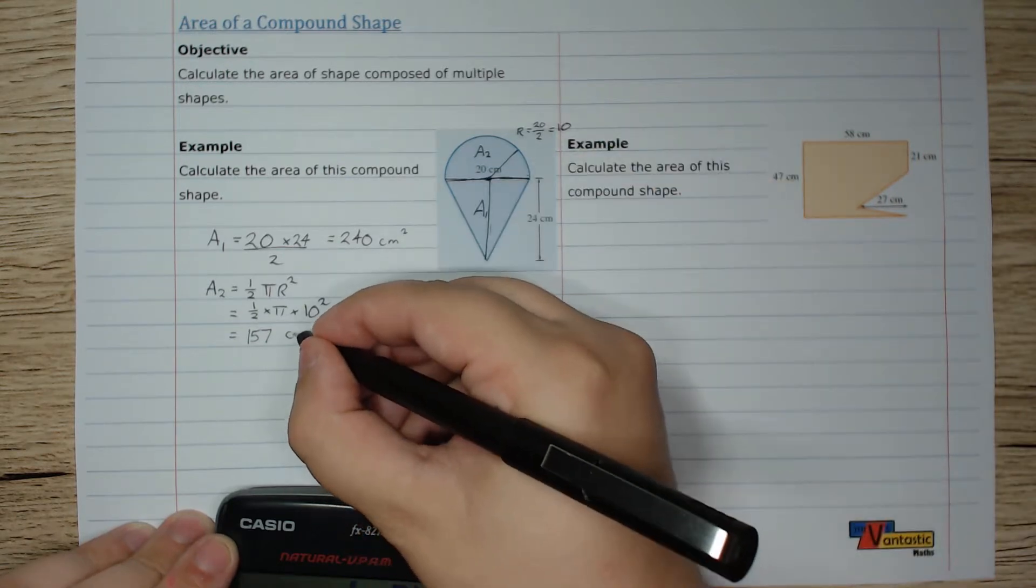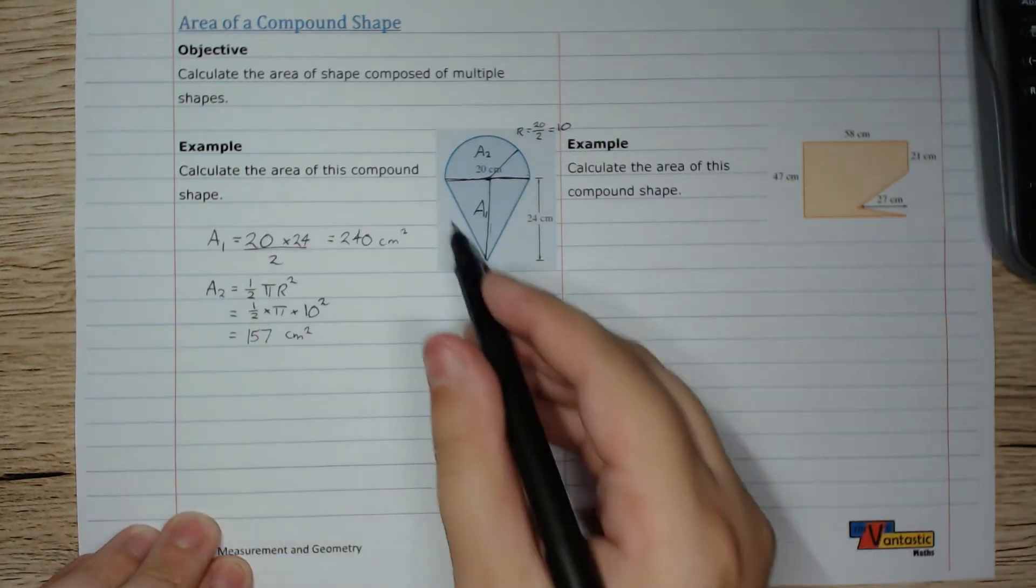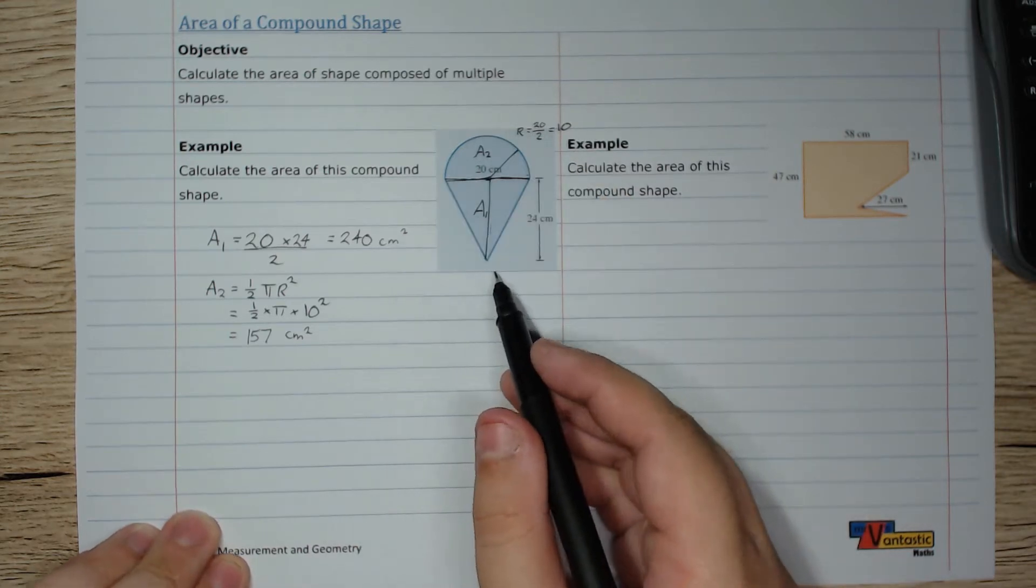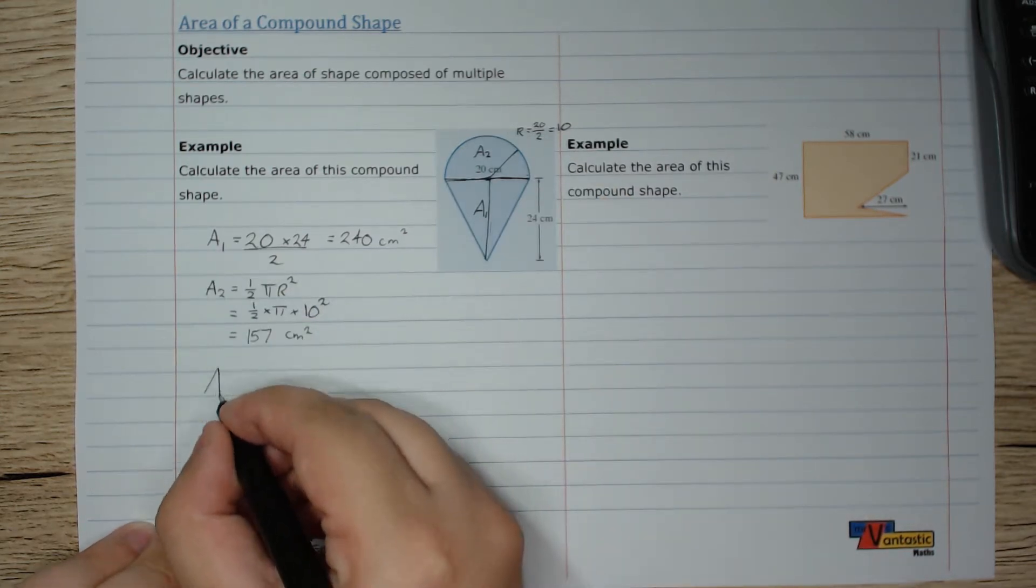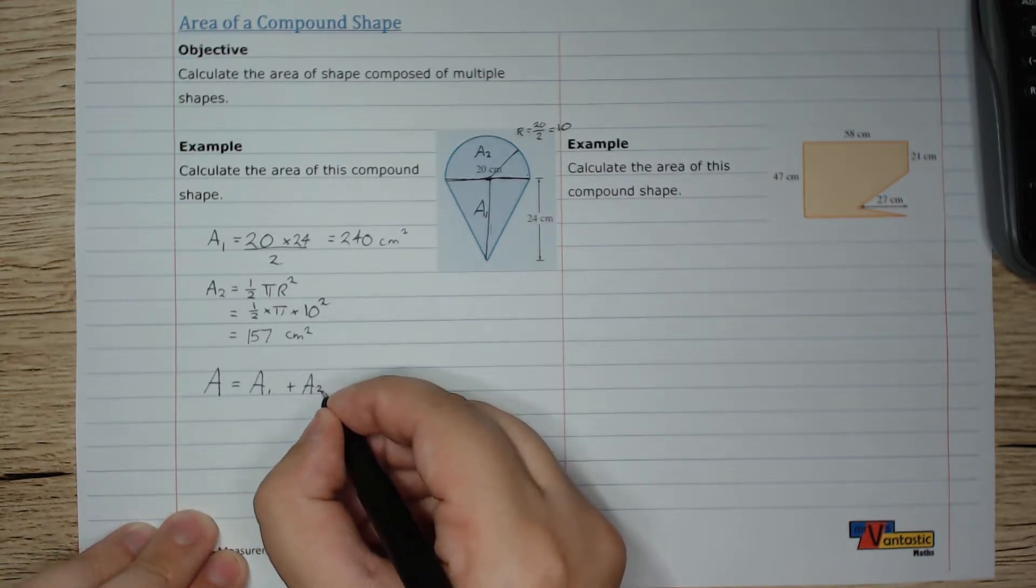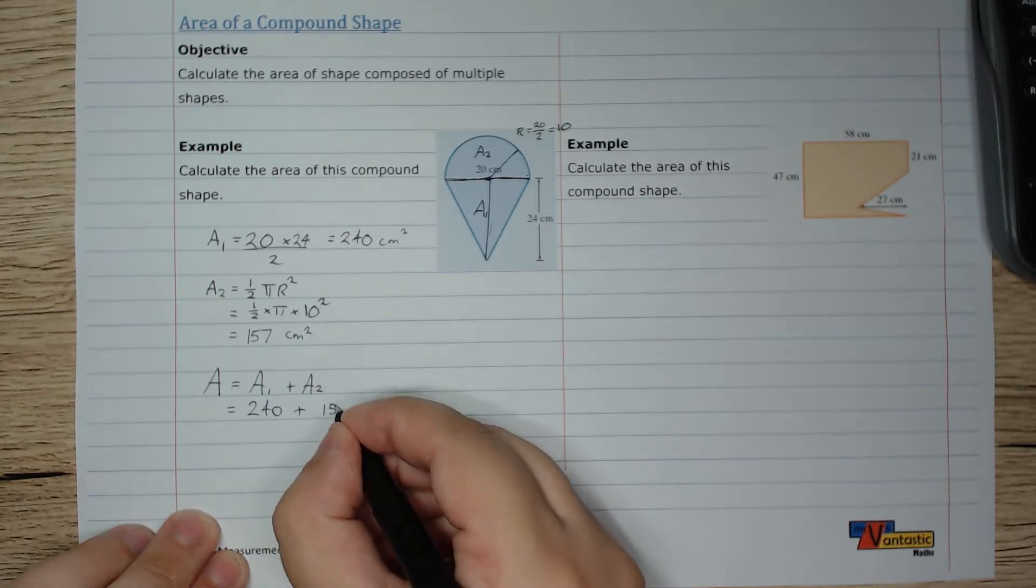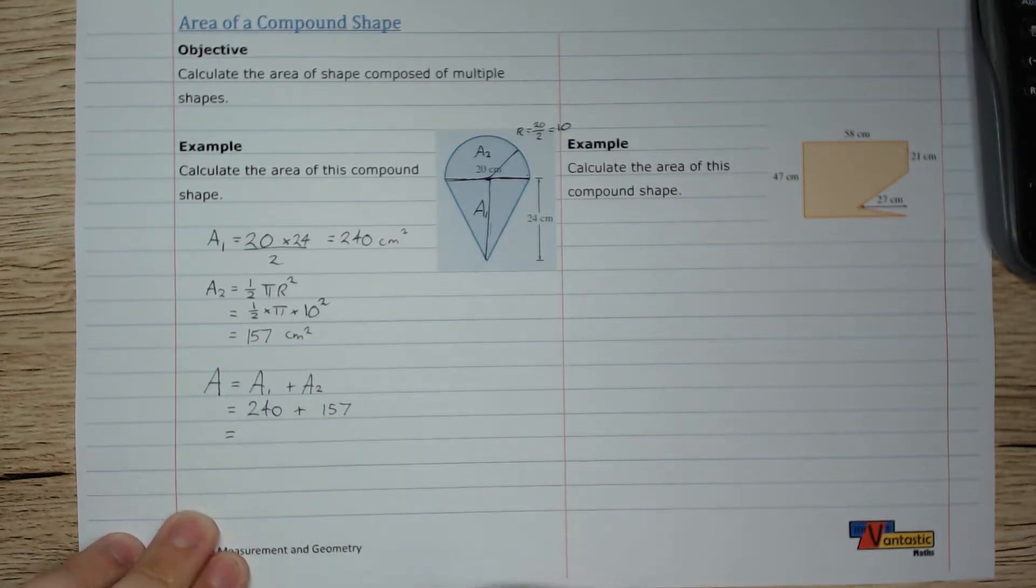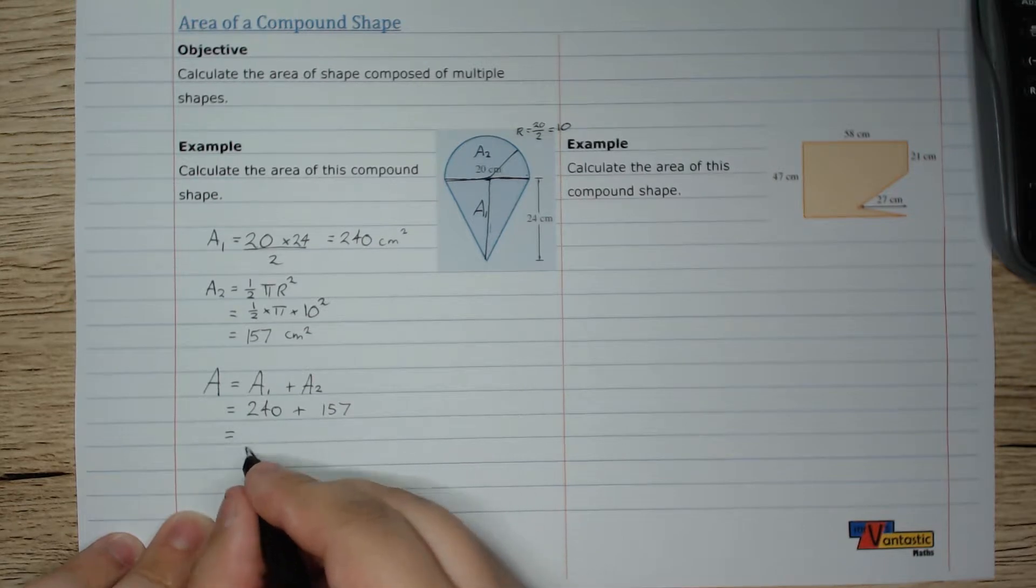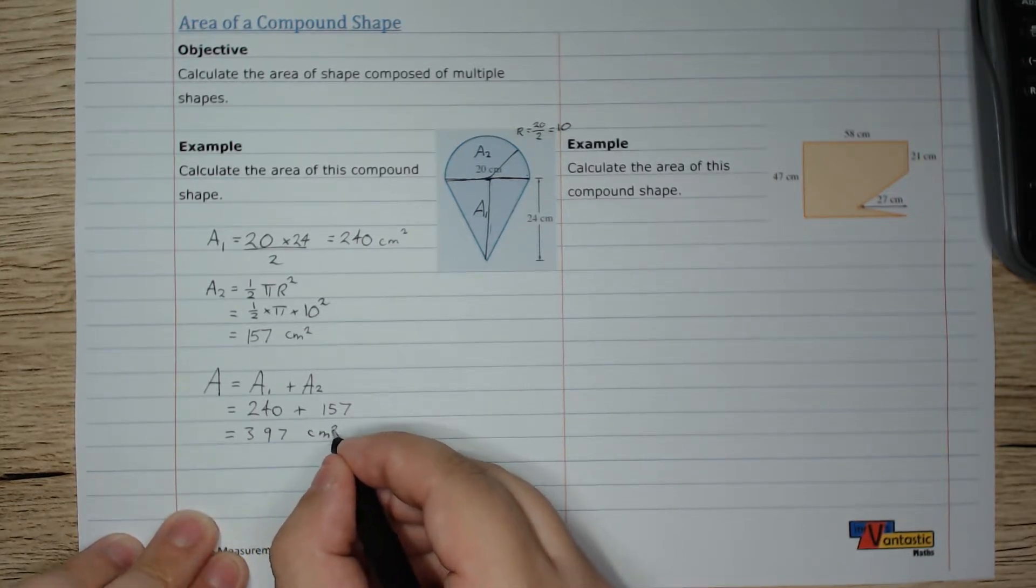And again, it's centimeters squared, and so the total area of this shape is going to be these two added up. So area equals area one plus area two, which is 240 plus 157, which is 397 centimeters squared.